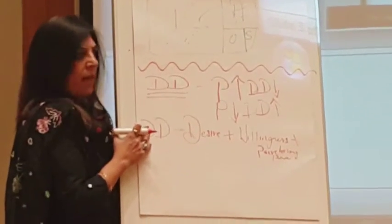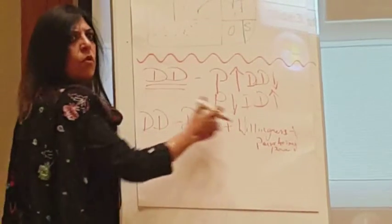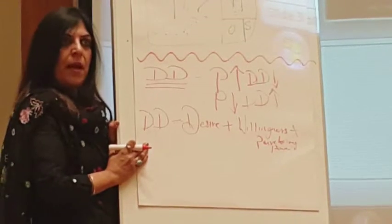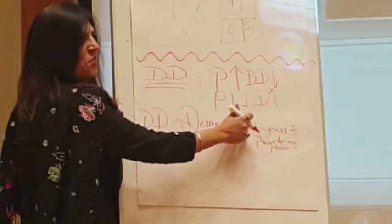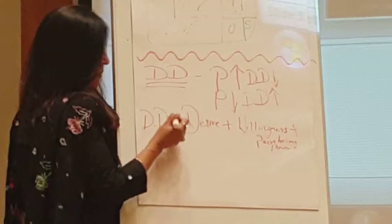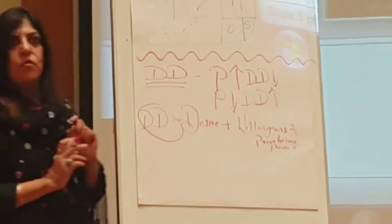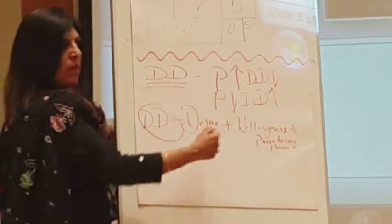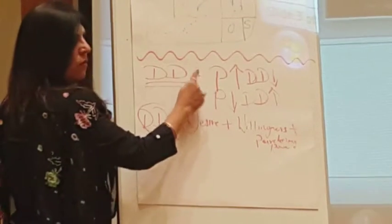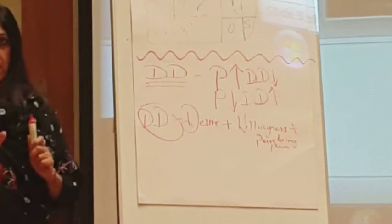A rich man has a desire to buy a car and the purchasing power, but he doesn't want to buy now — he wants to buy after six months. Is it demand? No. A poor man has the desire and willingness but doesn't have the ability. Is it demand? No. So these three conditions must be fulfilled to make demand complete. If they ask what is the law of demand: price up demand down, price down demand up.